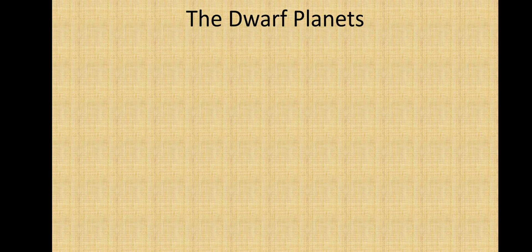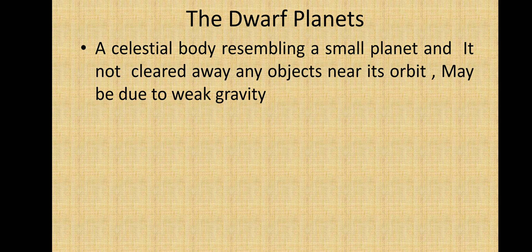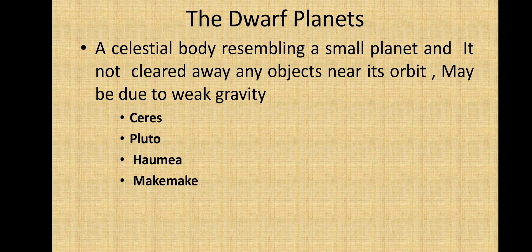Now let's move on to the dwarf planets. A dwarf planet is a celestial body resembling a small planet but it may not have cleared away any objects near to itself, possibly due to its weak gravity. The five dwarf planets are Ceres, Pluto, Haumea, Makemake, and Eris.